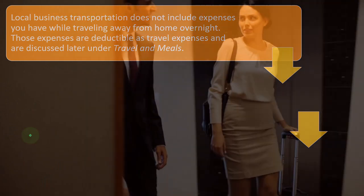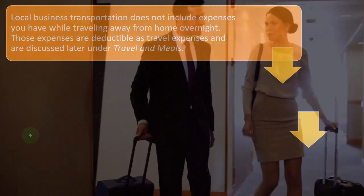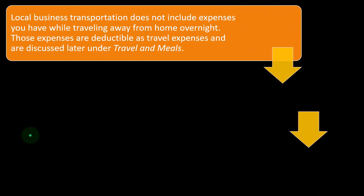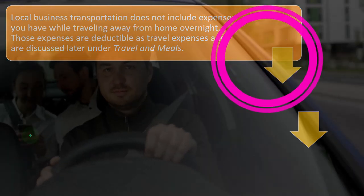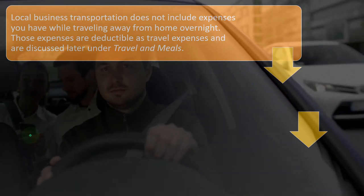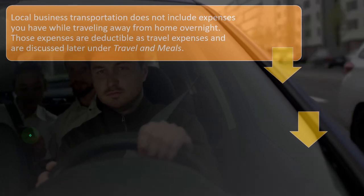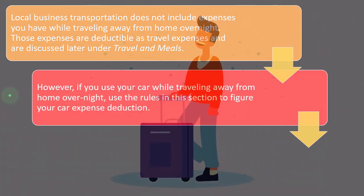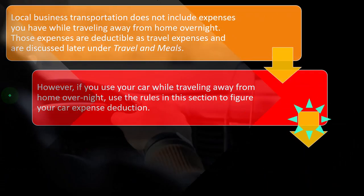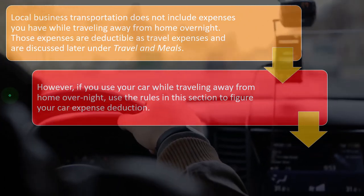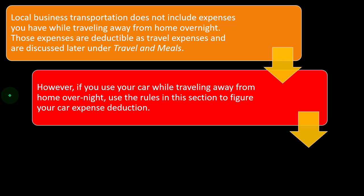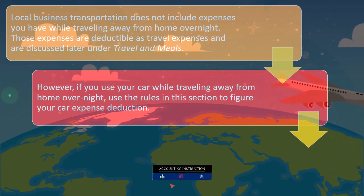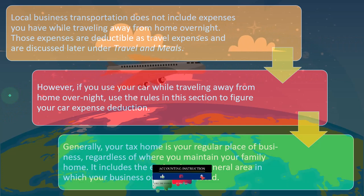Local business transportation does not include expenses you have while traveling away from home overnight. The tax code breaks up the type of expenses for travel, such as driving your car for local travel around your tax home, and the longer distance travel where you'd typically be spending the night outside of your local area. Those expenses are deductible as travel expenses and are discussed later under travel and meals. However, if you use your car while traveling away from home overnight, use the rules in this section to figure your expense deduction. So if you're using your car for overnight travel, you might be able to track the mileage in a similar fashion as in your QuickBooks system.